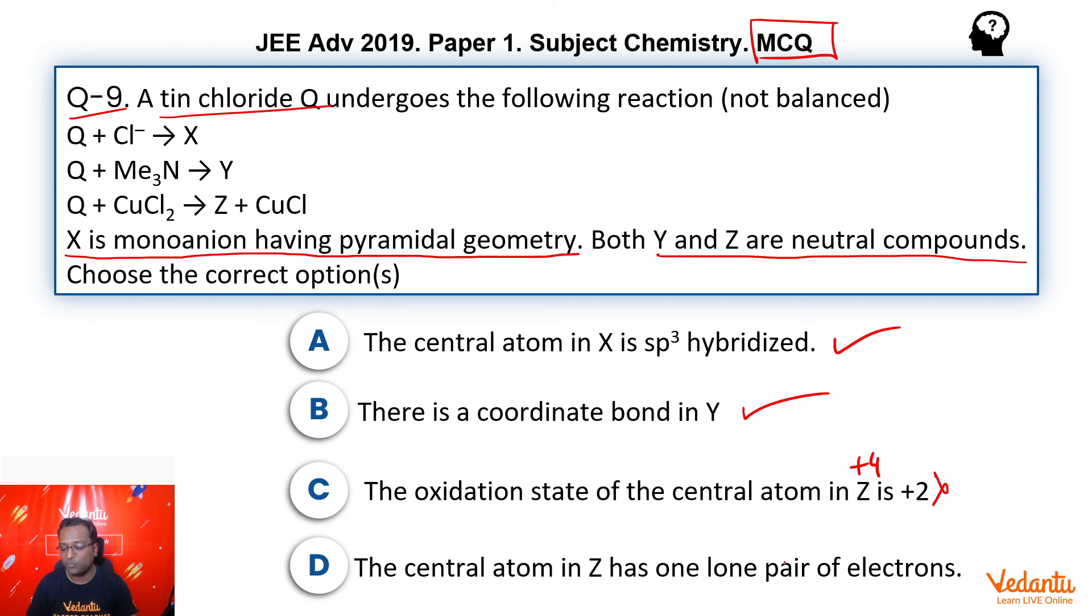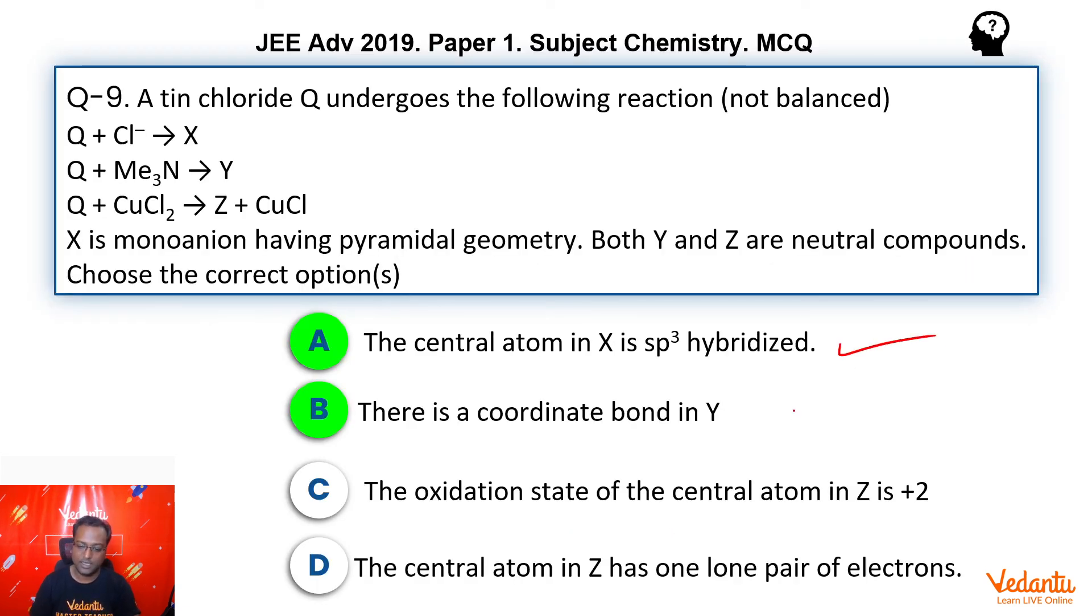The central atom in Z has one lone pair of electrons - wrong. Z was SnCl₄, it has 0 lone pairs. So the answer here is A and B.